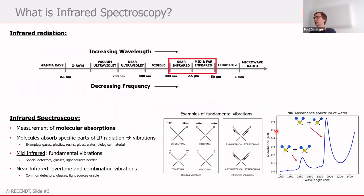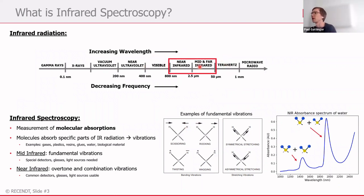Let's start with the topic: what is infrared spectroscopy? When we look at the electromagnetic radiation, it is situated between the visible and the terahertz wavelength ranges. Starting from the near infrared at 800 nanometers until 2.5 microns is the near infrared region, then from 2.5 to about 20 microns we have the mid infrared, and then the far infrared region. Today I will mainly focus on the near infrared but also talk a little about mid infrared.